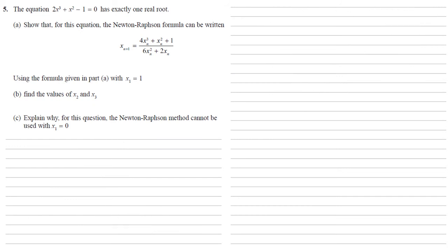We're now going to use the formula from part a with x1 equals 1 to find the values of x2 and x3. This is just a simple substitution question. So x2 equals 4 times 1 cubed plus 1 squared plus 1 all over 6 times 1 squared plus 2 times 1. We're just substituting that 1 in for x n. Solving that gives us 6 over 8 which equals 3 quarters.